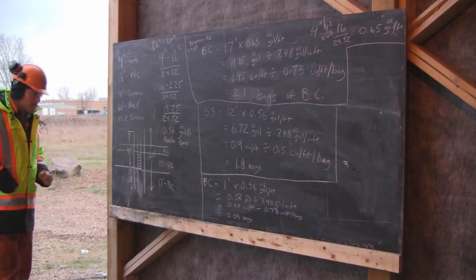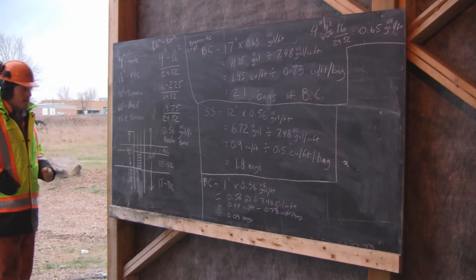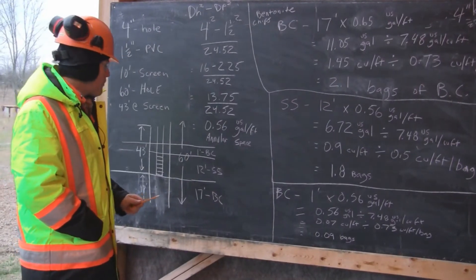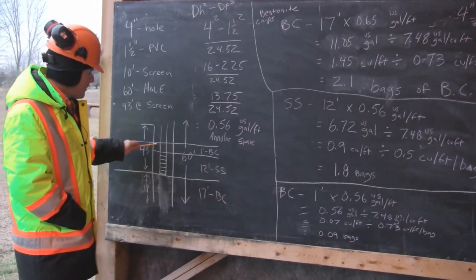On top of the silica sand, we must use 1 foot of bentonite chips. Again, we use our 0.56 US gallons per foot of annular space to fill this space here.